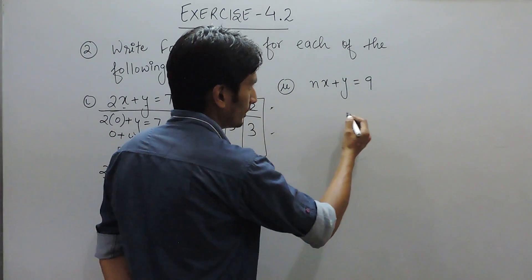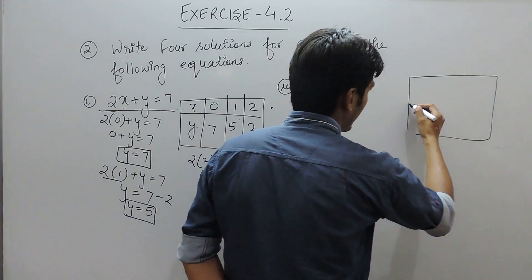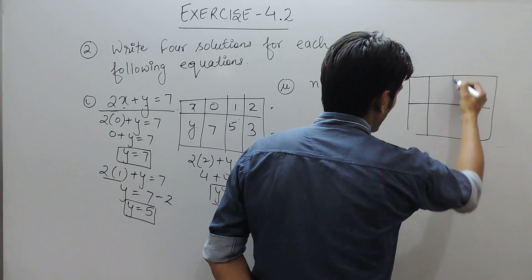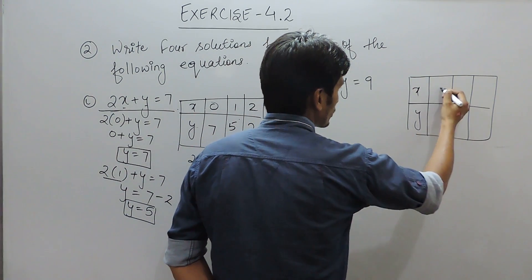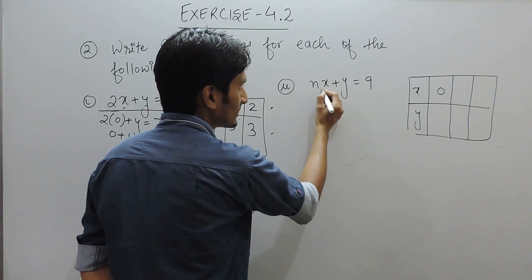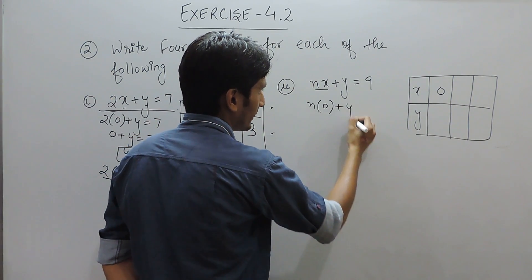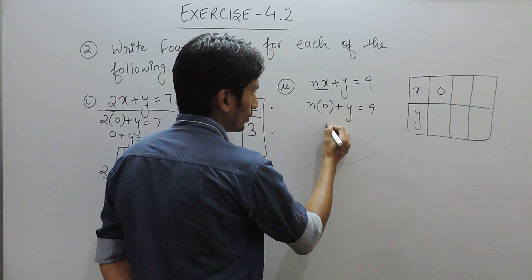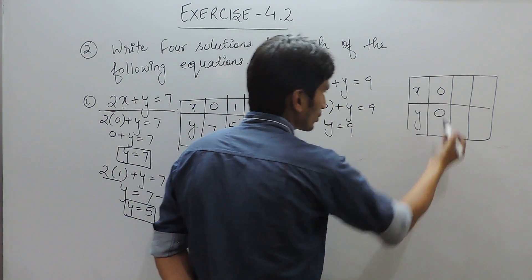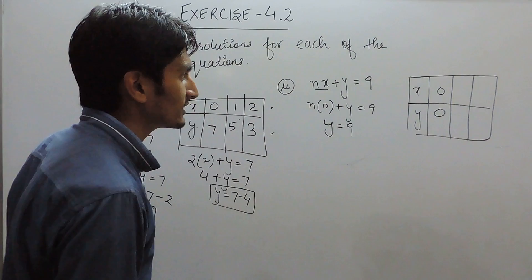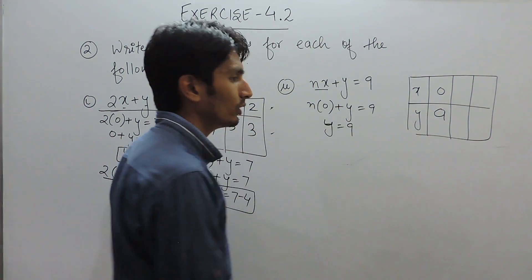In the next question, you again have to find the values of x and y satisfying the equation. First, put x equal to 0: n into 0 plus y equals 9, this gives 0, so the value of y becomes 9. When x equals 0, the value of y must be equal to 9.